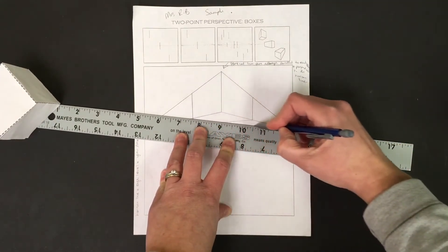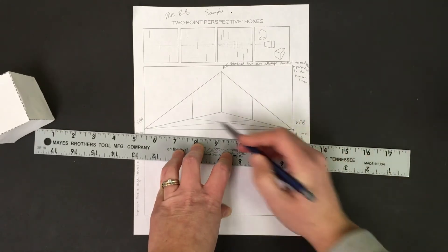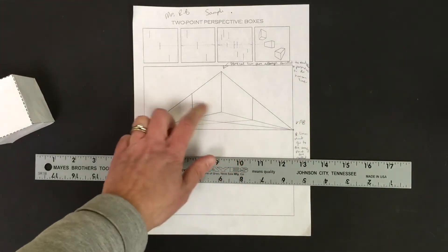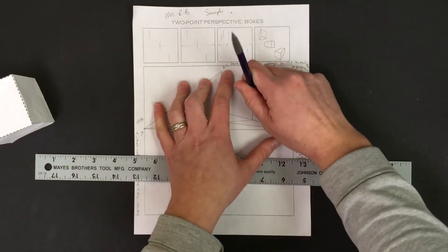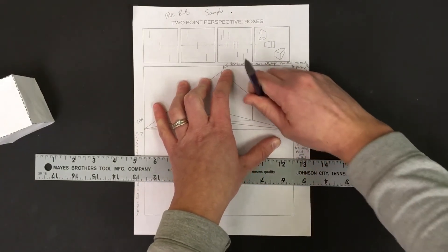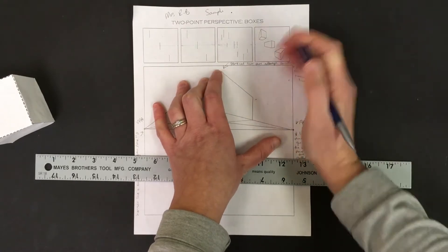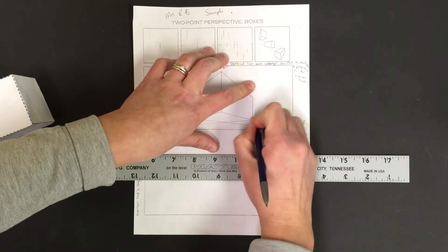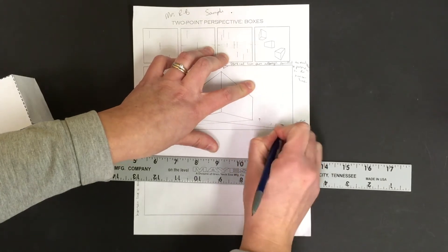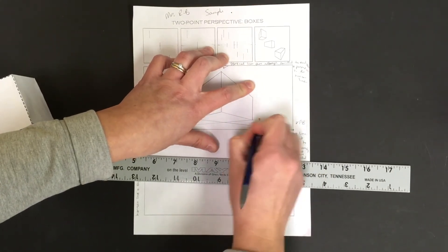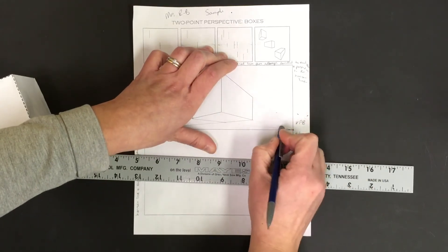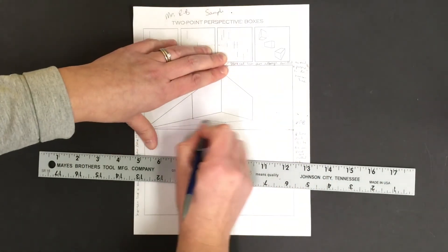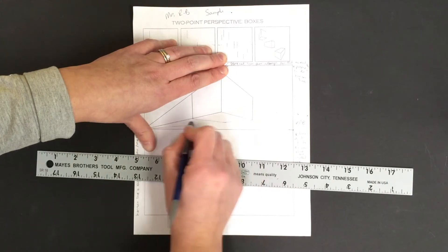And we have a box. Can everybody see the defined box in space? Now what's left to do is erase our extra orthogonals we don't need. Let's get rid of those. Get rid of those extra orthogonals.